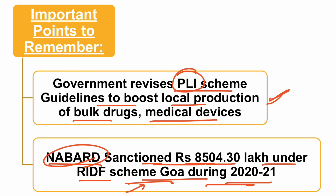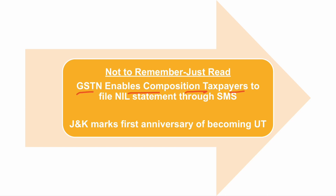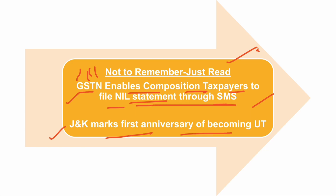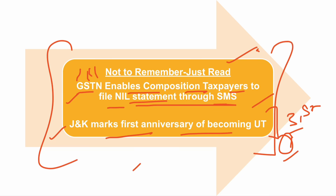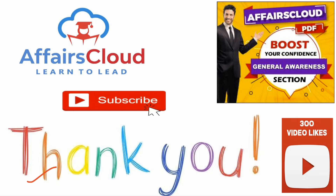GSTN — Goods and Services Tax Network — enabled composition taxpayers to file nil statements through SMS. Jammu and Kashmir marked its first anniversary of becoming a Union Territory on 31st October. Remember: J&K became a UT on 31st October, the same day as Sardar Vallabhbhai Patel's birth anniversary.